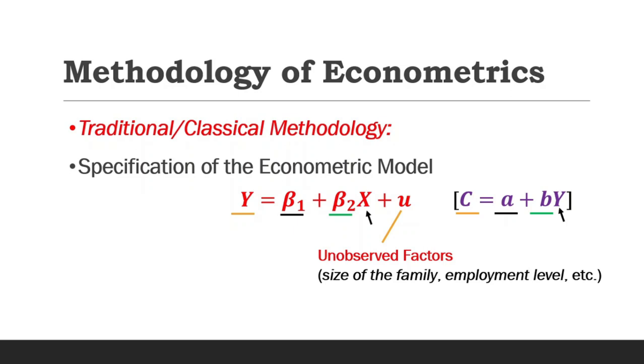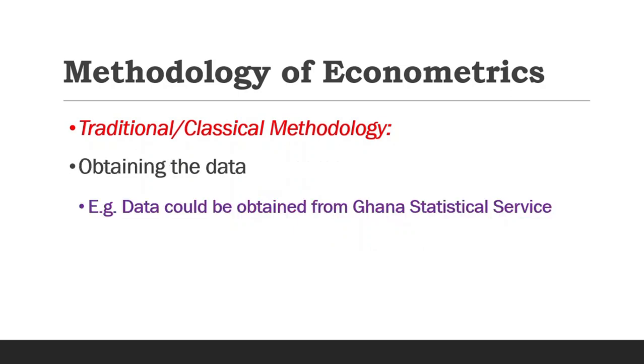So the next step after the econometric model is to obtain the data. And data can be obtained from the Ghana Statistical Service. It can also be obtained from the World Bank or World Development Indicators. Sometimes the researcher may want to obtain primary data by going to the field and administering questionnaires, conducting interviews.